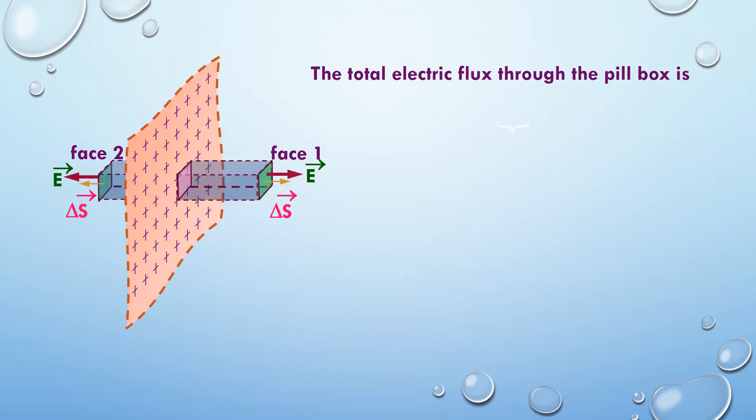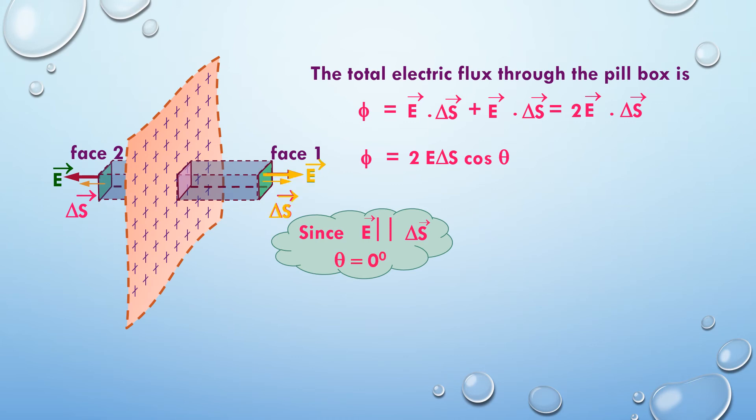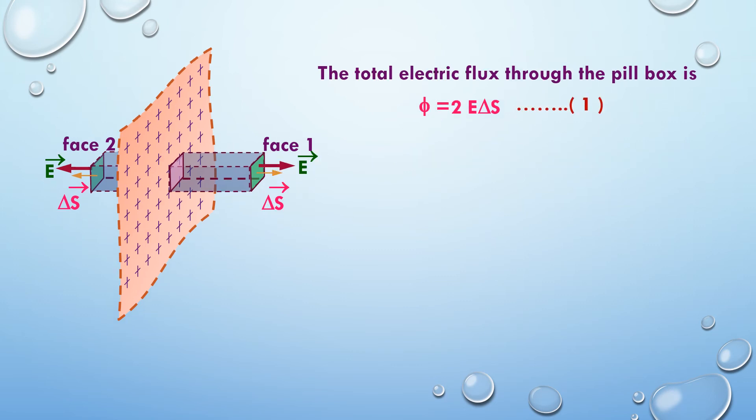So the electric flux or the total electric flux through this imaginary surface or this pillbox should be due to flux E delta S which is due to face 1 plus E into delta S which is due to face 2, where you will get this is 2E into delta S. Therefore, flux is equal to 2E delta S cos theta, where theta now should be the angle between electric field and area vector delta S. What we find out here is E which is parallel to delta S should be giving you theta is equal to 0 degrees. Hence, 2E delta S cos theta is equal to 2E cos of 0 or cos of 0 is equal to 1. Hence, we get 2E delta S. Let us call this as equation 1.